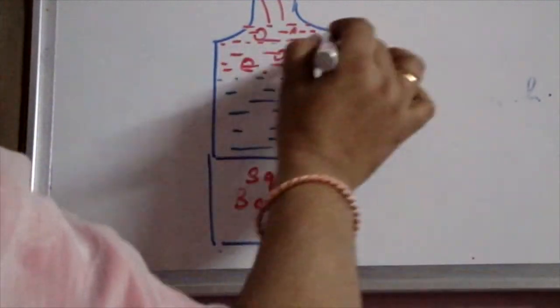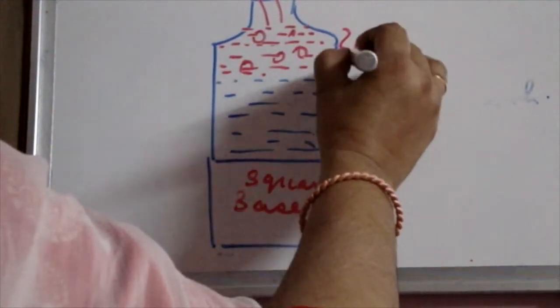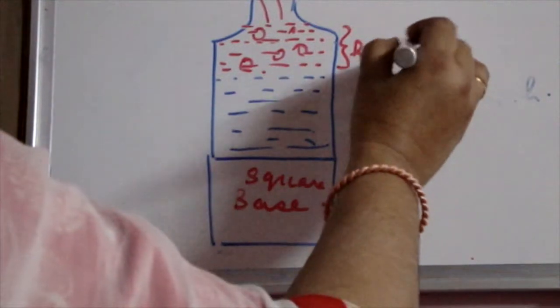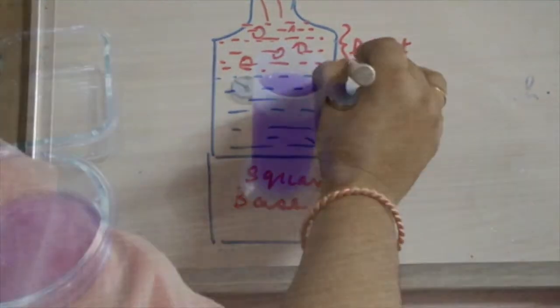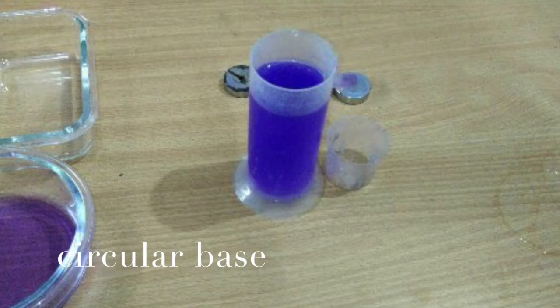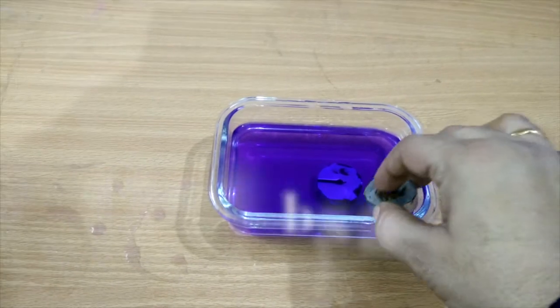If it is a cylindrical container, then base area is circular and volume will be calculated as area of circle into height.